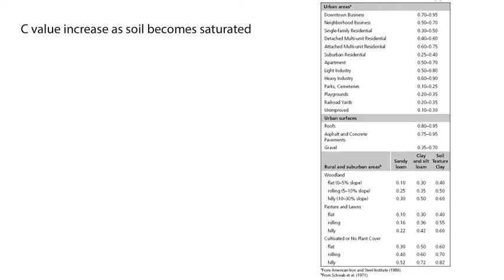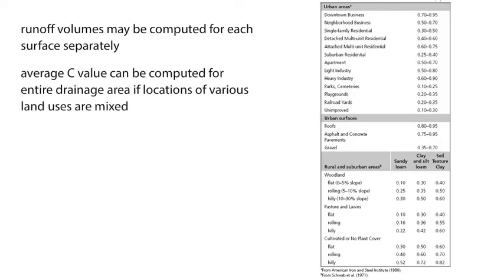Most drainage areas consist of a variety of surfaces with different C values. Runoff volumes may be computed for each surface separately, or an average C value can be computed for the entire drainage area if the locations of the various land uses are mixed throughout the area.